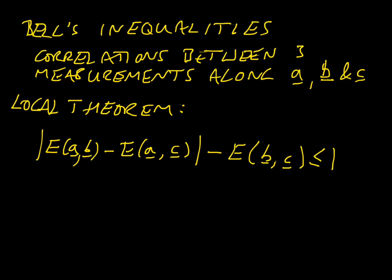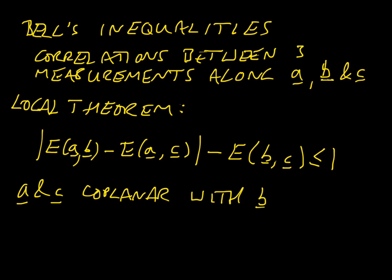It's easy to show that this inequality is violated. If you consider A and C coplanar with B, and you make B bisect the angle between A and C, you can immediately find that this inequality is violated. This is a simple demonstration showing that you cannot replace the results of quantum mechanics with a single local — i.e. dependent only on one point in space — hidden variable theory.